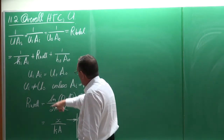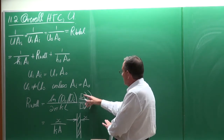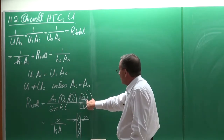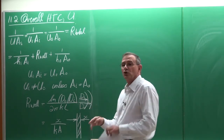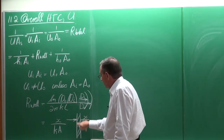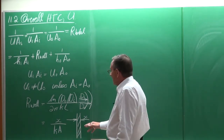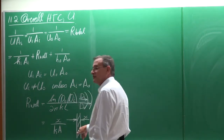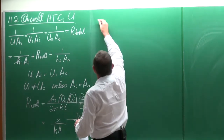In terms of the resistance of the wall, we normally look at two different types in heat exchangers. One is the tube-in-tube type, where heat transfer occurs over the wall between the inner diameter and the outer diameter. The other is a flat wall, typically found in a plate heat exchanger, where the resistance is determined by the thickness divided by the thermal conductivity of the wall multiplied by the area.